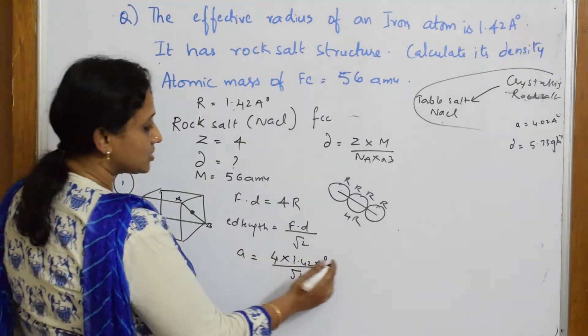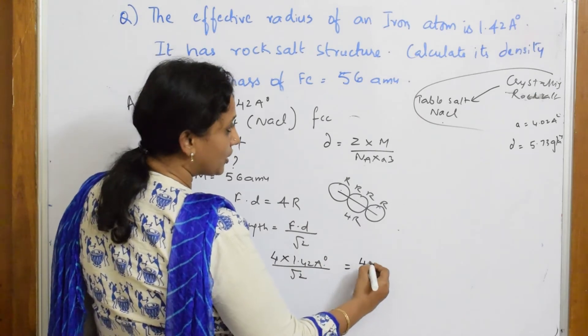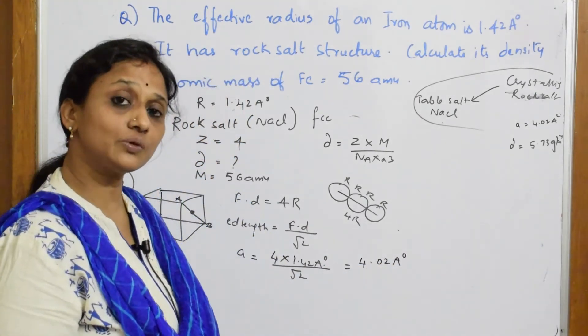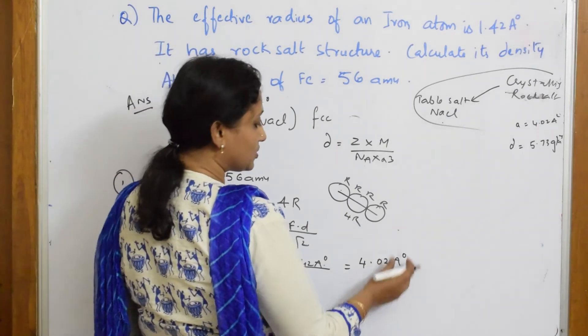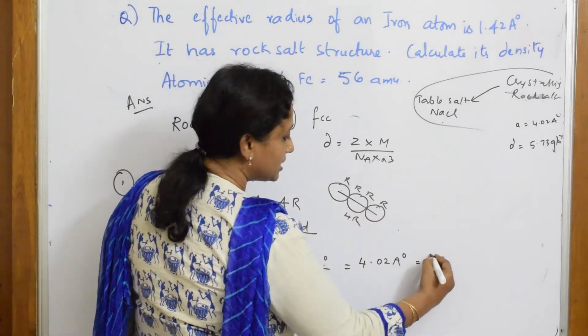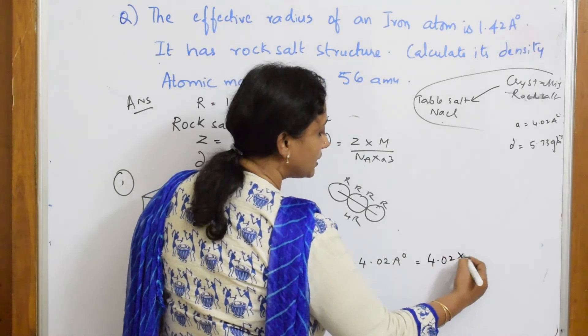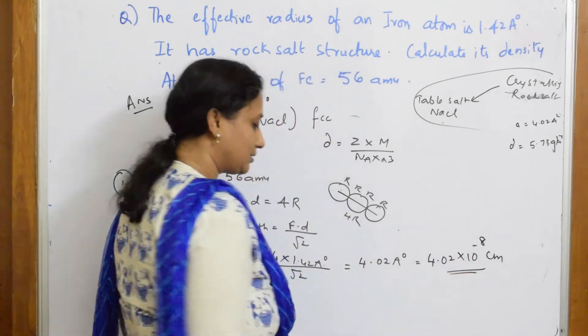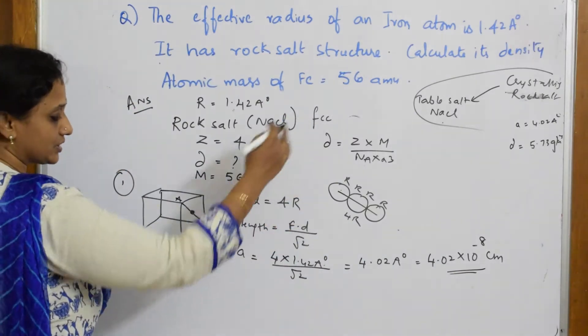Now when I solve this, I get an answer of 4.02 angstroms. What is 4.02 angstrom equal to centimeter? Because I have to convert everything in centimeter. It is equal to 4.02 into 10 raised to the minus 8 centimeter. Correct?